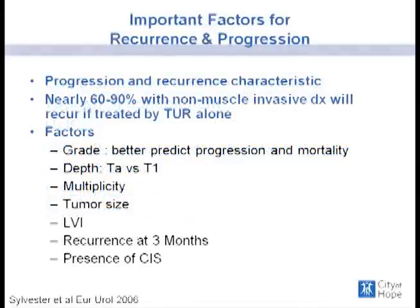The important factors determining whether a patient will recur or progress: non-muscle invasive disease characteristically will recur, and the majority will recur if treated by TUR alone. Higher grade, deeper stage, multiple tumors, larger tumors, lymphovascular invasion, the presence of carcinoma in situ, and recurrence at the first surveillance at three months after initial diagnosis are all predictors of progression and recurrence.